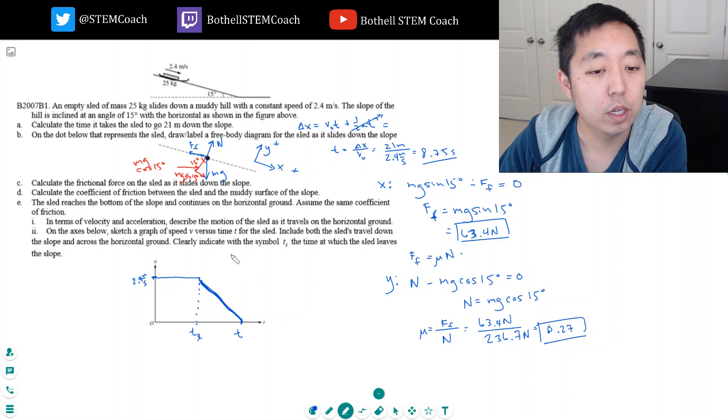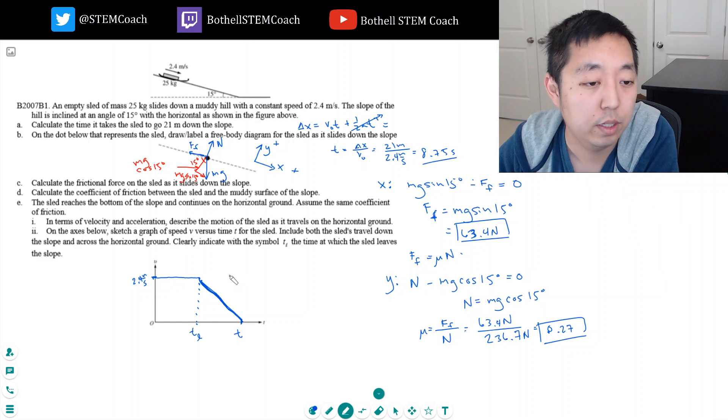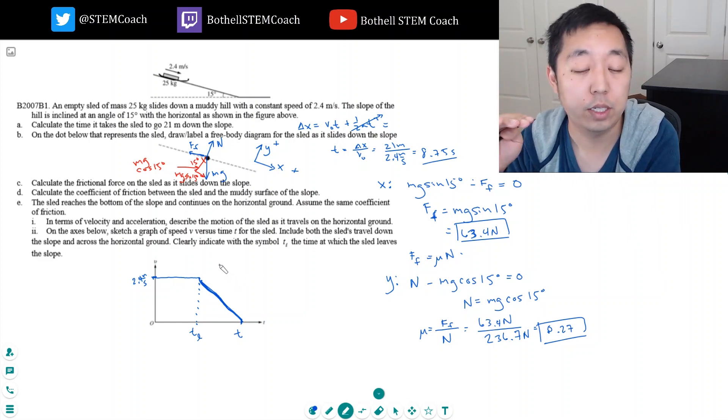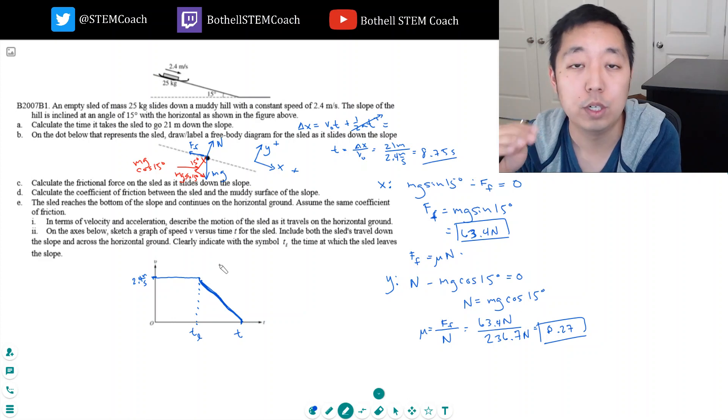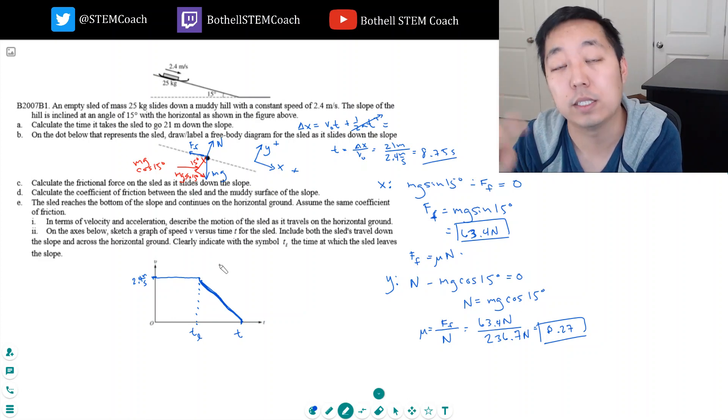That's it. In terms of velocity, describe the motion - I think we just described it. It would have a constant velocity as it travels on the horizontal. It would be subject to a constant frictional force which would decrease its velocity until it stopped, basically.